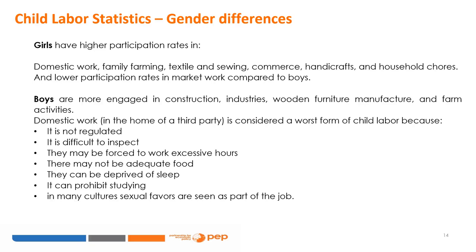Domestic work means working in the home of a third party and is different from household chores. Girls are more involved in family farming, textiles and sewing, commerce, handicrafts, and private house services. Boys, on the other hand, are engaged in construction, industries, wooden furniture manufacturing, and farm activities. Domestic work is considered a worst form of child labour as it is not regulated and difficult to inspect. Girls may be forced to work excessive hours without adequate food, deprived of sleep, prohibited from studying, and in many cultures sexual favours are part of the job.